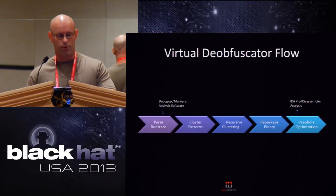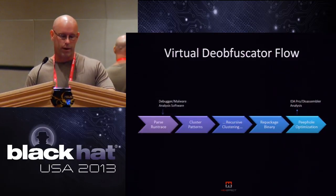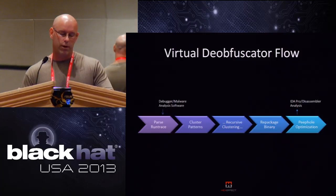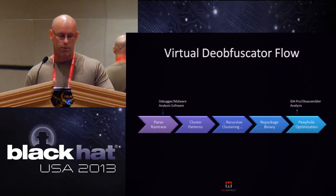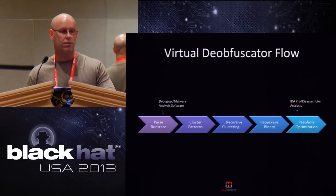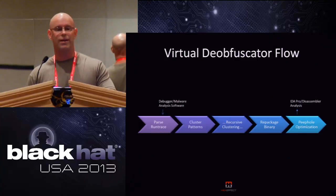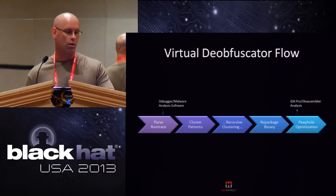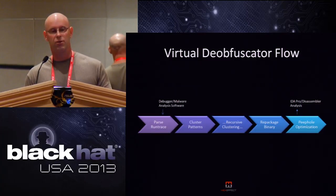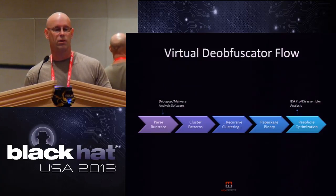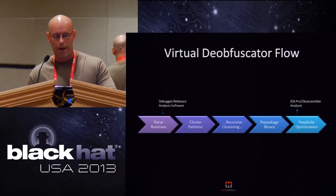Here's a flow of how it works: create the run trace, then feed it into the virtual deobfuscator. It will parse it and create a little database. It will start clustering and recursively cluster until it cannot find any more. Then the idea is you assemble it, which is part of the repackaging of the binary.